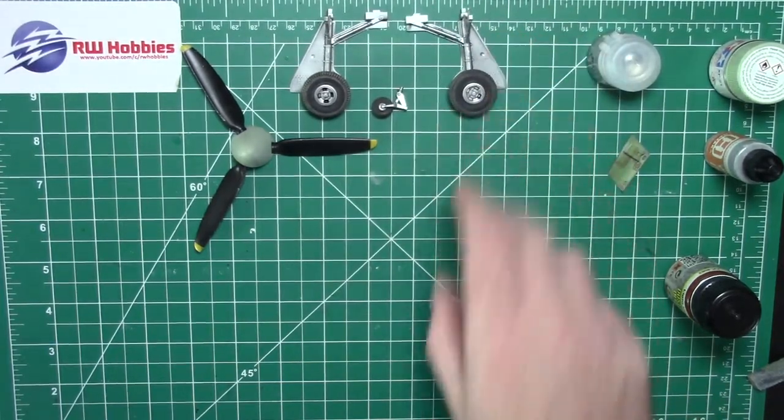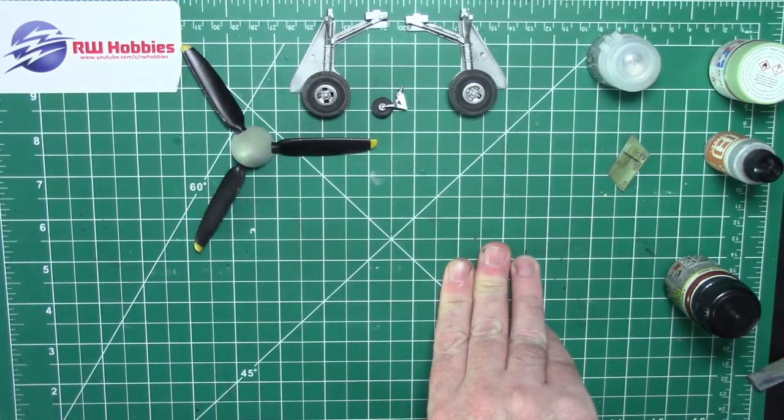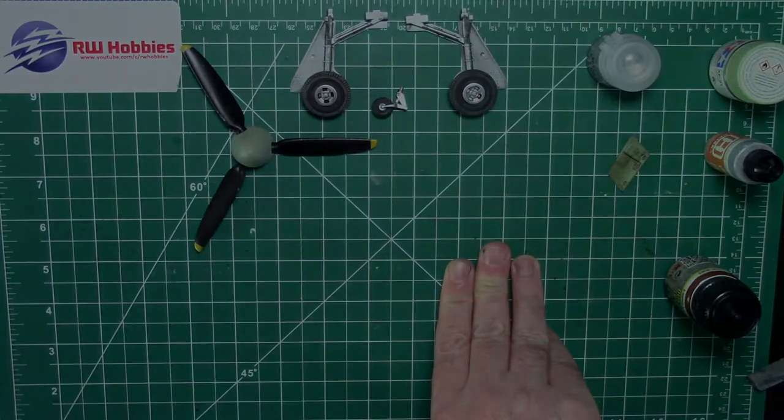All we got left now really to do today is the canopy and mask it up with the Montex mask set. I'm going to do the canopy, mask it up, and then we'll be ready next week for priming and painting.